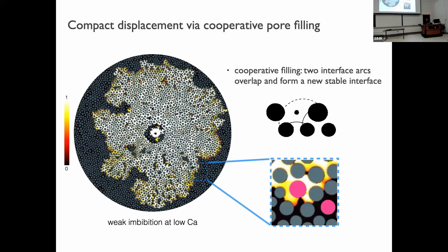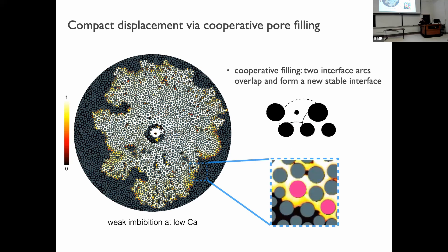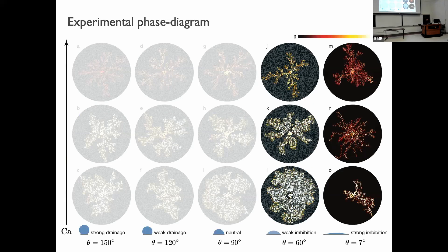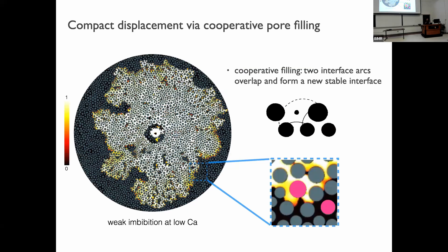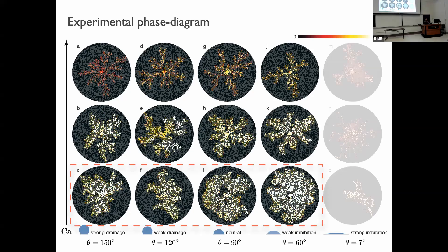This is indeed what we observe in our experiments. You can see that at the posts highlighted in pink, interfaces meet, merge, and form a single interface that advances smoothly in a compact displacement pattern. However, if you want to achieve more and more compact displacement by decreasing the contact angle further, it turns out that is only true up to a point. When we decrease the contact angle from 60° to 7°, the displacement pattern completely changes and we actually get significantly less compact displacement.